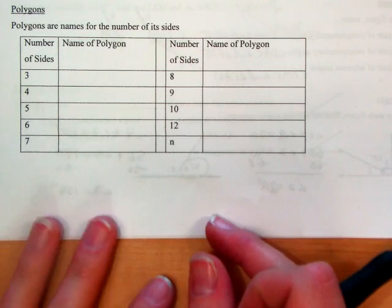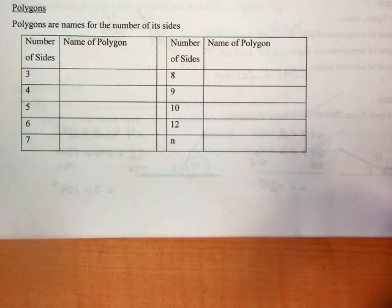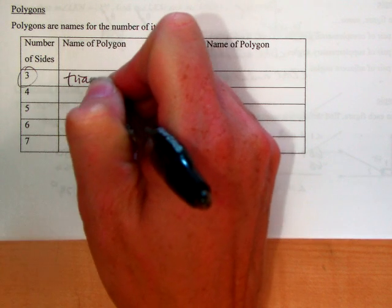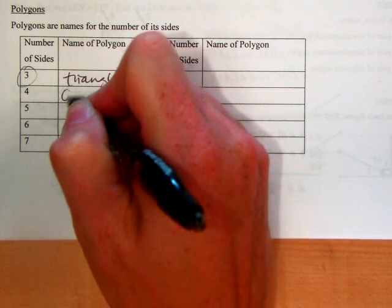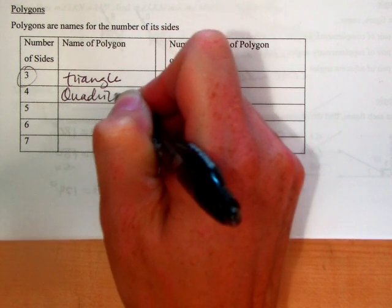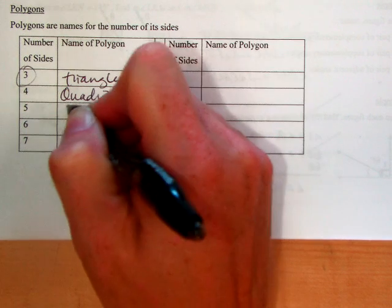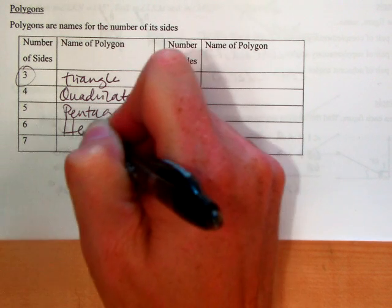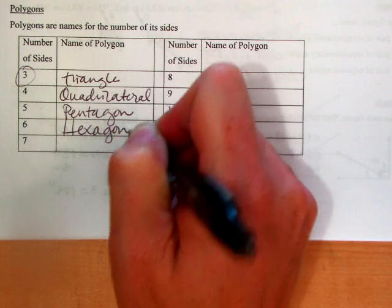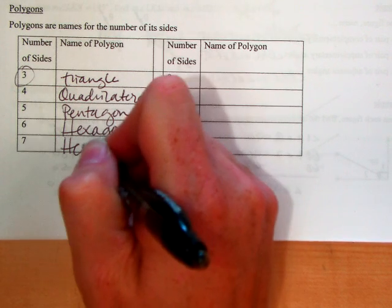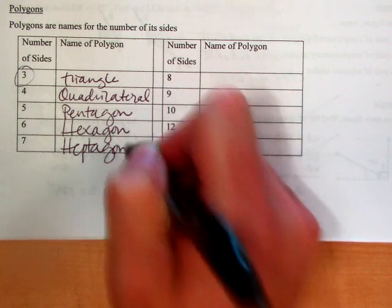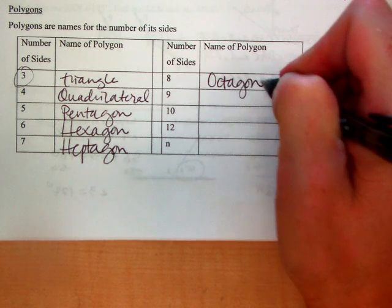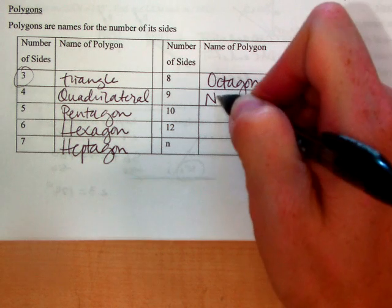There are a bunch of different polygons. If it has three sides, it's called a triangle. Four sides, it's called a quadrilateral. Five sides, it's called a pentagon. Six sides, hexagon. Seven sides, it's called a heptagon. Eight sides, octagon. Nine sides, it's called a nonagon.